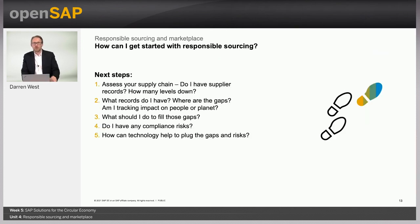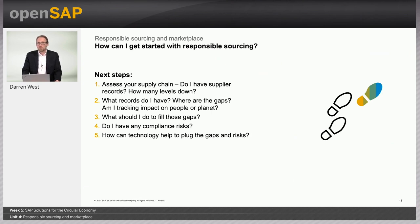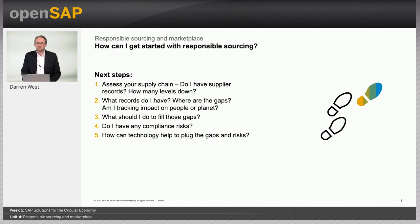Let's wrap up and look at what you can do next in your organization to improve your responsible sourcing. Your next steps might be to check what information you have in your current supply chain systems — we've asked a few questions on the slide for you to think about. That's the end of this unit. Thanks for listening. We'll see you again later.